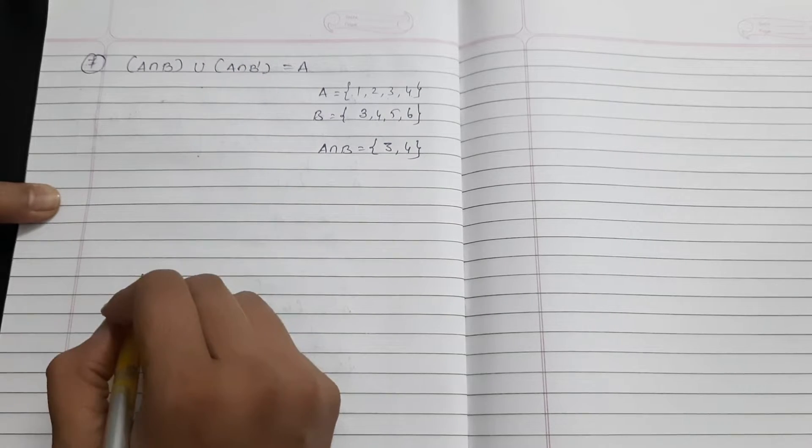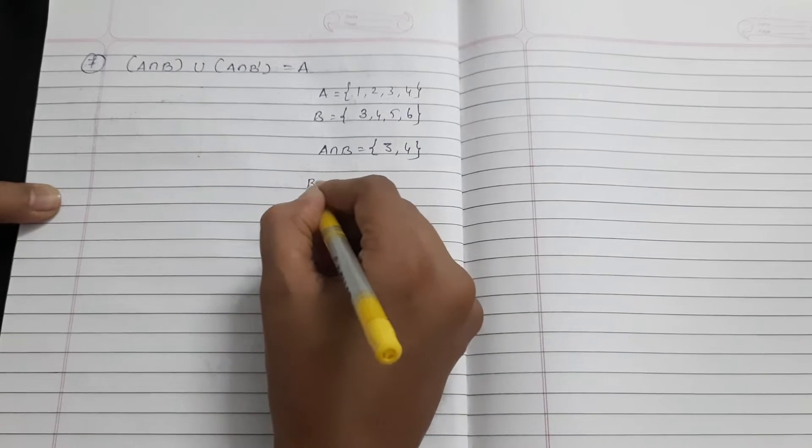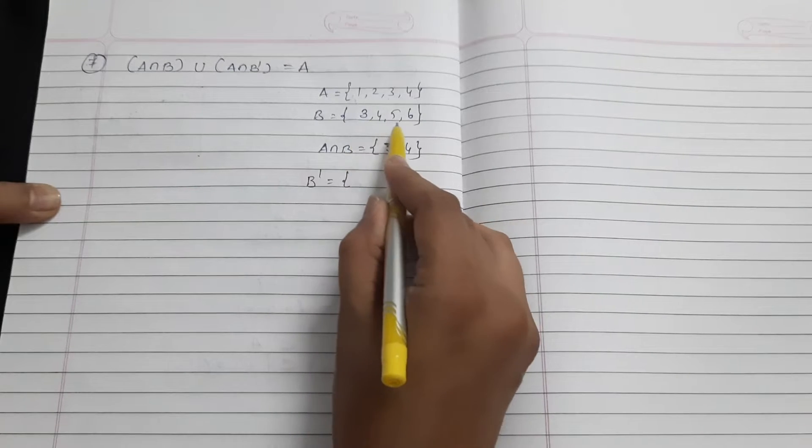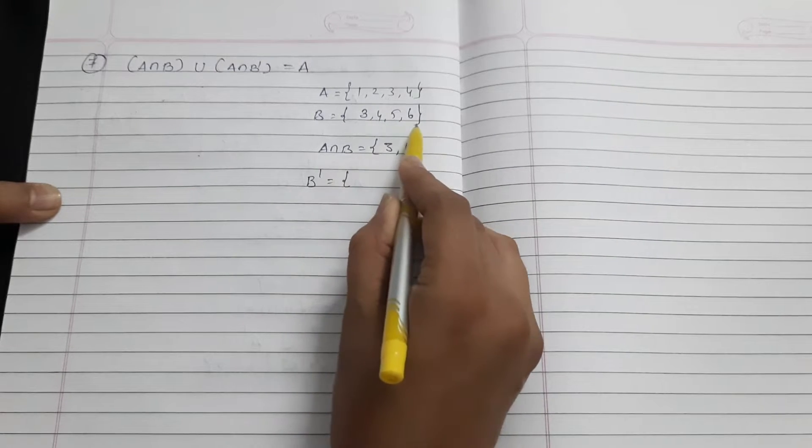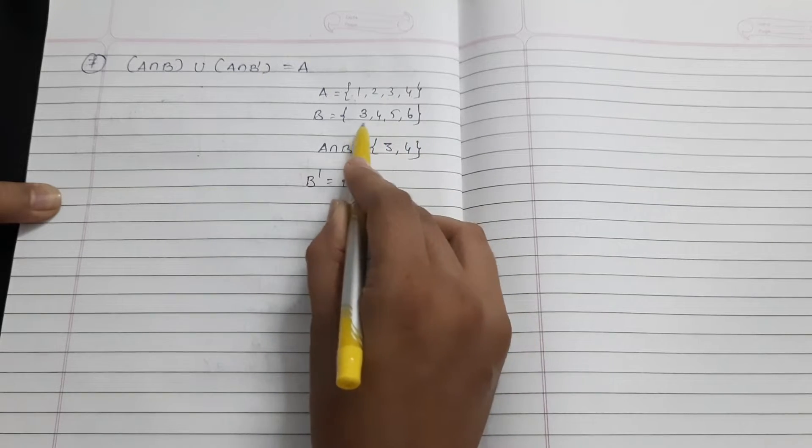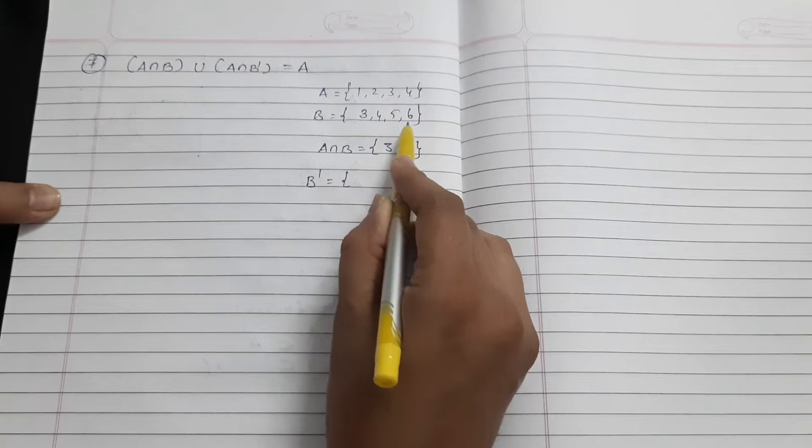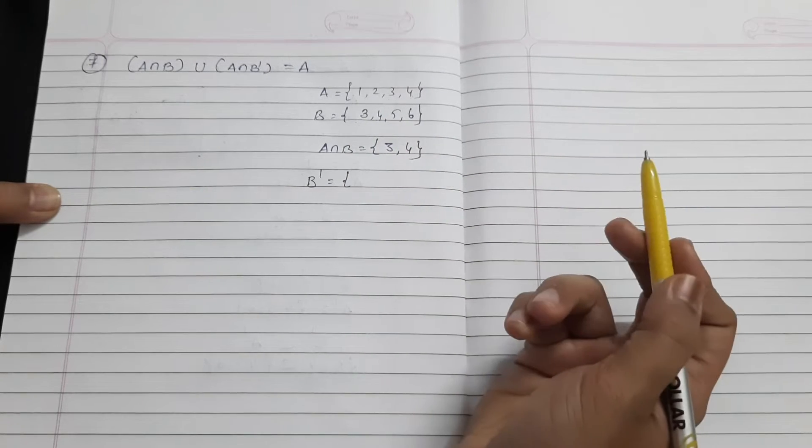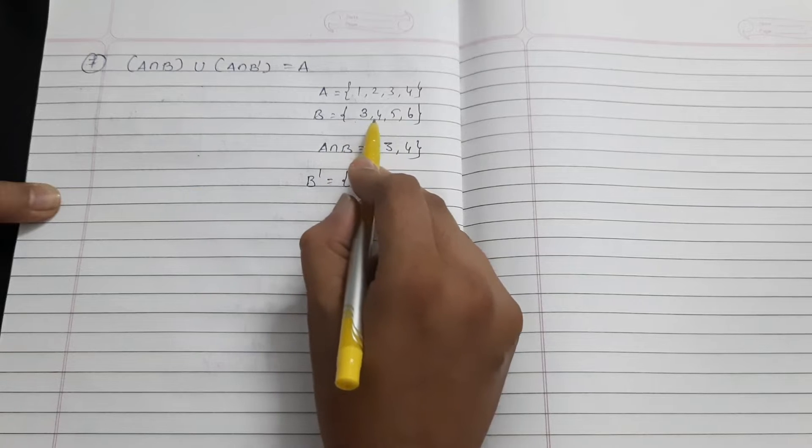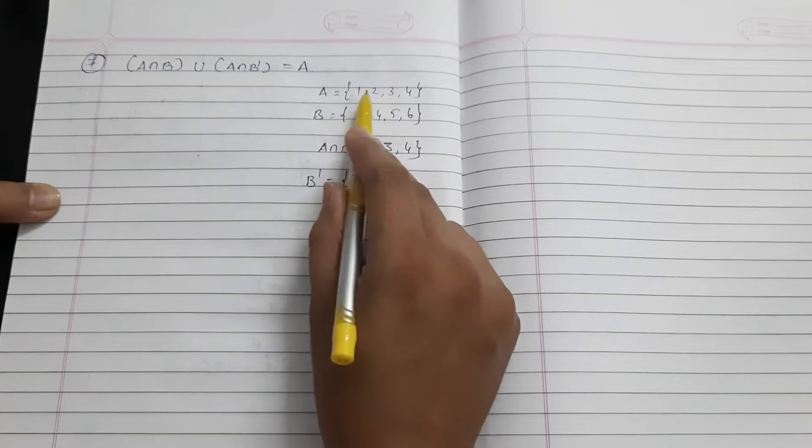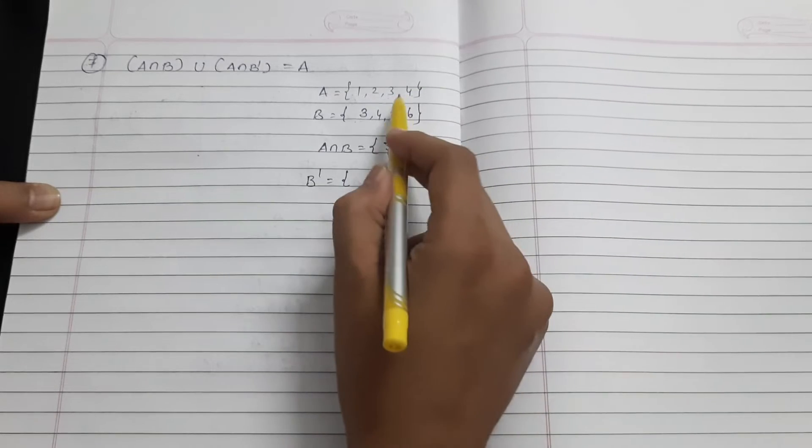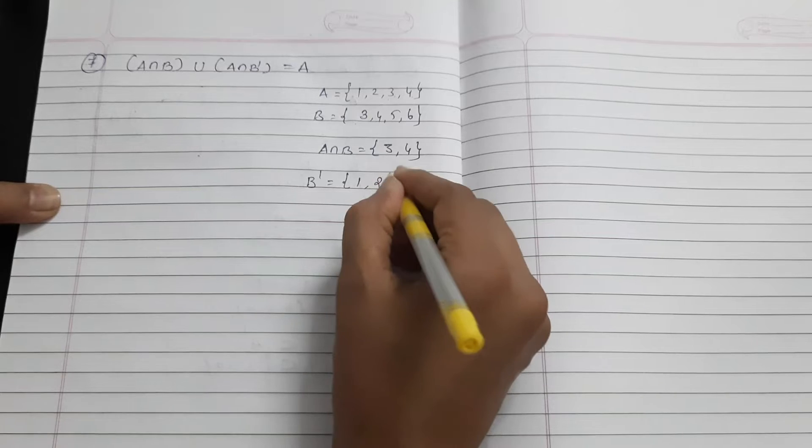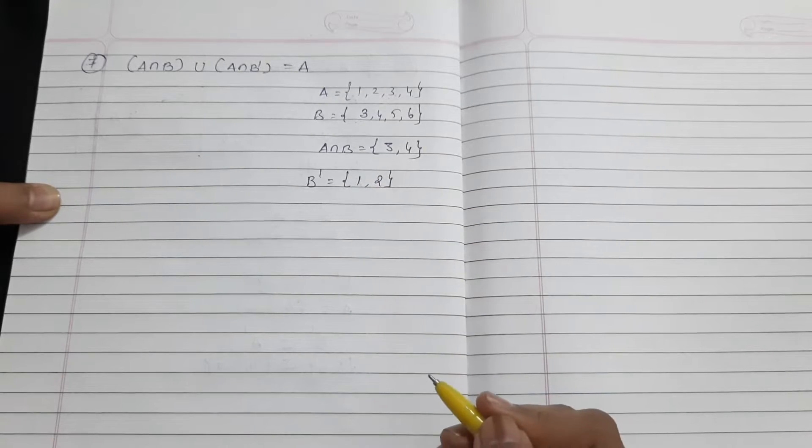Then A intersection B dash. B dash means B complement - we take elements that are not in B. If we look at the universal set, we can see 3, 4, 5, 6. In A we have 1, 2, 3, 4. We don't want 3, 4 because they're in B. So we get the rest of the elements: 1, 2.